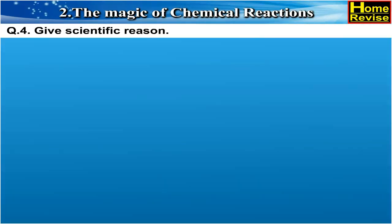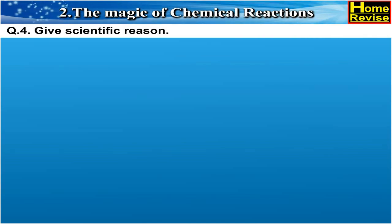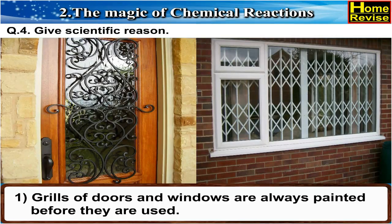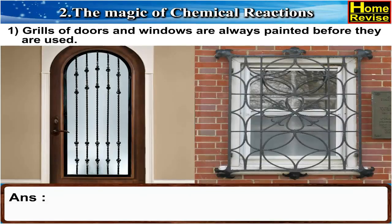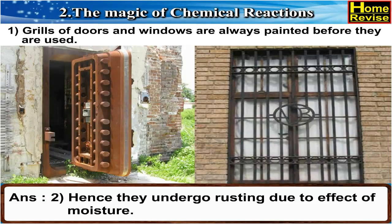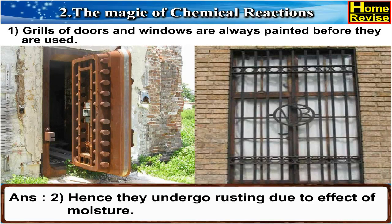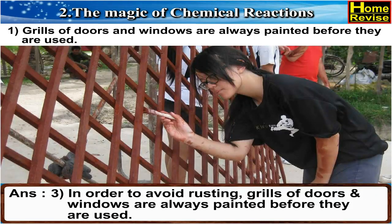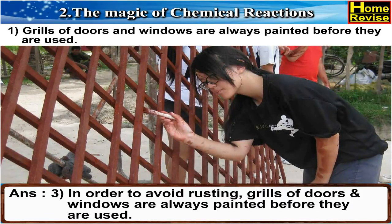Question 4: Give scientific reasons. 1. Grills of doors and windows are made up of iron, hence they undergo rusting due to the effect of moisture. In order to avoid rusting, grills of doors and windows are always painted before they are used.